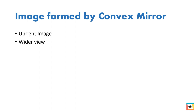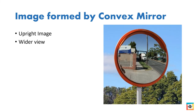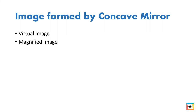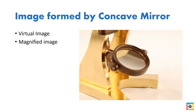Convex mirrors produce upright images and give a wider scope of view. They are used as security mirrors, staircase mirrors, and blind corner mirrors on roads. Concave mirrors produce virtual images which are magnified if the object is near the mirror. They are used as dentist's mirrors, cosmetic mirrors, and in microscopes.